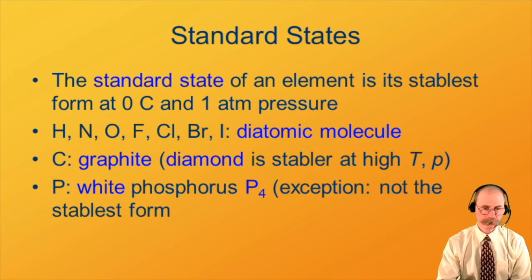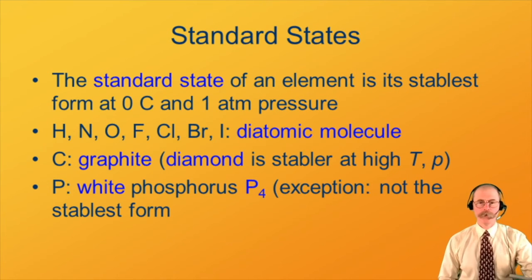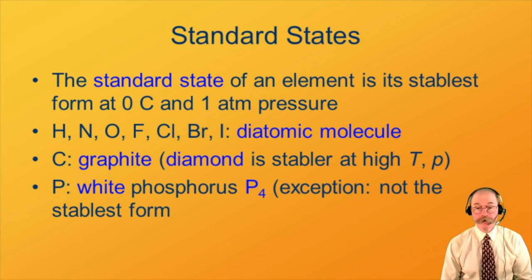Phosphorus is an exception. The stablest form of phosphorus is not the standard state. The standard state of phosphorus is white phosphorus, which is the molecule P₄. It's not as stable as red phosphorus or black phosphorus, but there you have it. White phosphorus is the stuff that ignites on exposure to air. That's the stuff that Hennig Brand made by boiling buckets and buckets and buckets of urine.